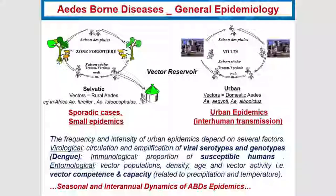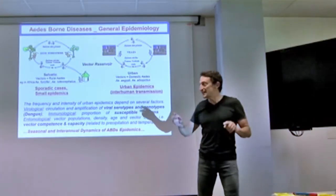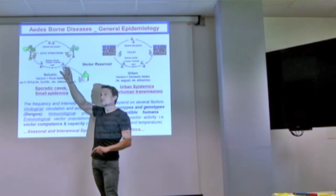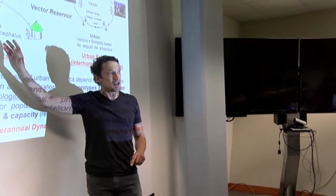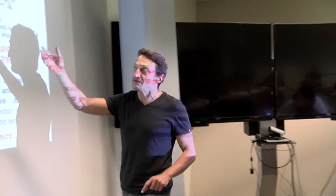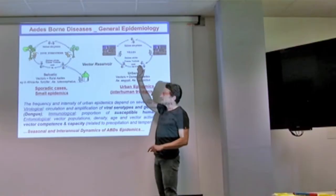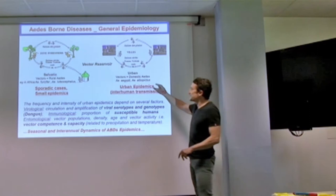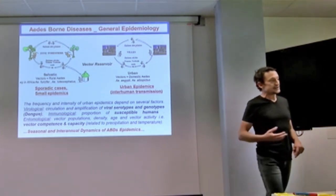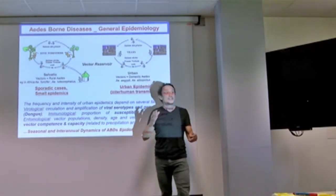In general, for Aedes-borne diseases we can distinguish, in terms of epidemiology, two cycles. All these diseases are zoonoses, which means that we have a sylvatic natural cycle among primates and the virus is transmitted by mosquitoes among this population of primates. Sometimes in the field, in the forest, humans can be affected by these viruses. And sometimes, depending on the epidemiology of the disease, we have a different cycle — we call it the urban cycle — involving urban Aedes such as Aedes aegypti and Aedes albopictus, and in this case animals don't play a role. It's only inter-human transmission.